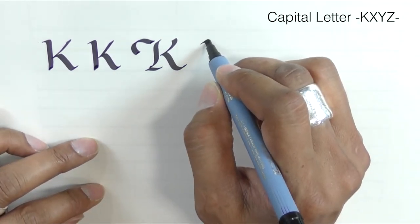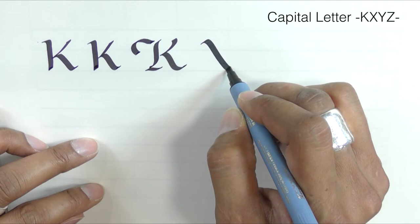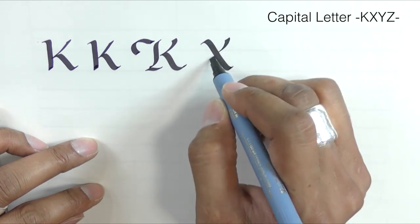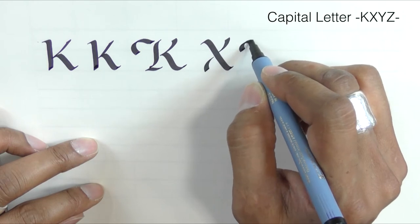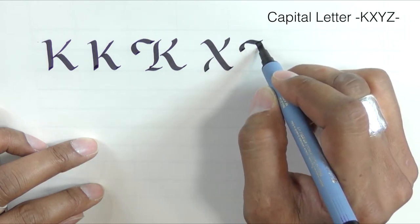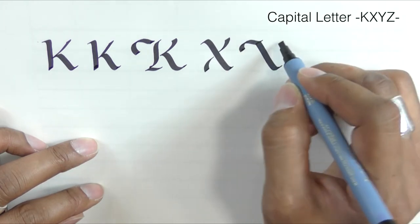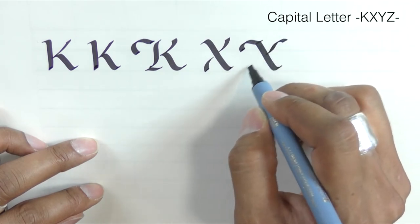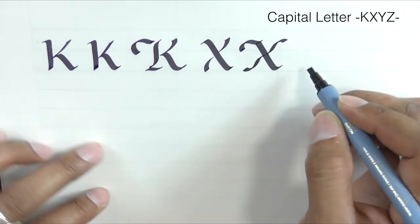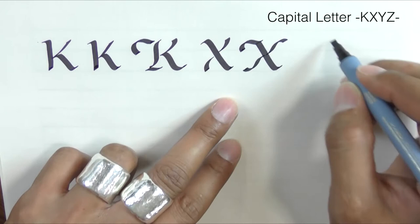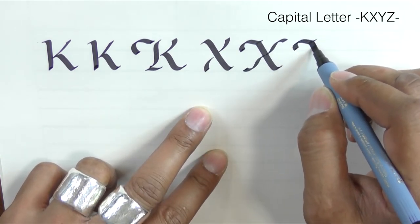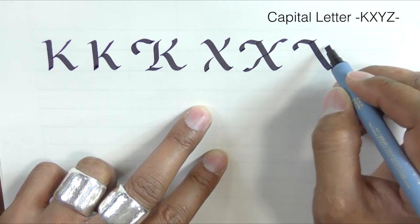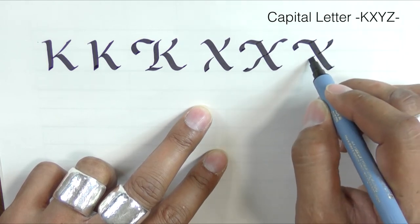The X. You can put a swash, so this little bump. Because the X is already so big, I tend to like to keep it simple.